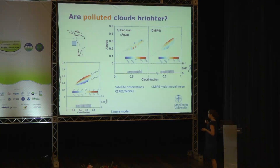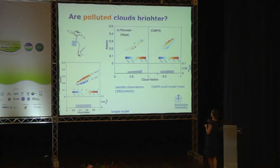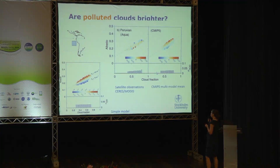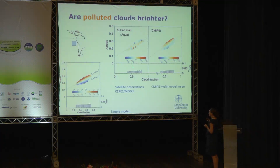In the Peruvian region, our theoretical model is shown for reference demonstrating cloud brightening. In the CMIP5 multi-model mean of 20 models, the theoretical pattern comes through clearly: for low aerosol optical depth (blue colors) we have low albedo, and for high aerosol optical depth (red colors) we have high albedo — cloud brightening with increasing aerosol. Going to the satellite observations, we don't see that pattern at all. There is similar AOD variability, but the aerosol optical depth values are not systematically distributed and are not creating this gradient in albedo-cloud-fraction space.